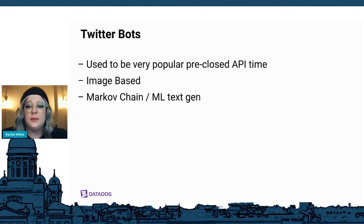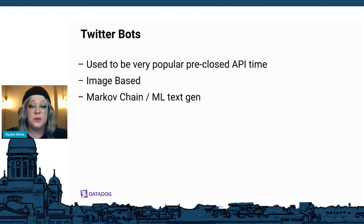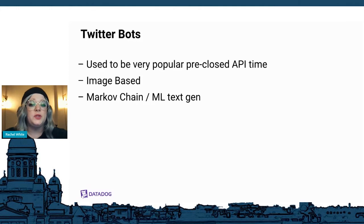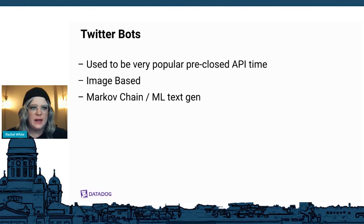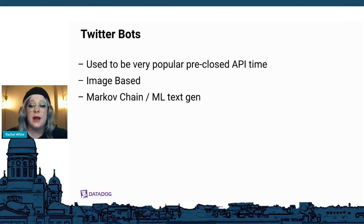I want to tell you a little bit about some background for Twitter bots. They used to be very popular a few years ago before Twitter made it so you had to apply for a developer account to access their API. There are two kinds of bots: generative image bots, and text-based bots that tweet random words from mashed-together sections or Markov-chained data from various corpora. It was a great way for people to get their hands on some code and try things out.